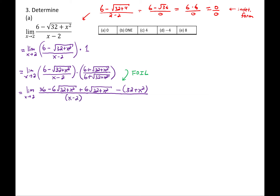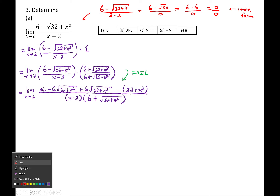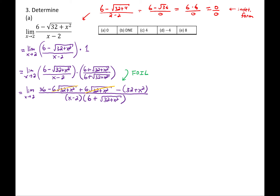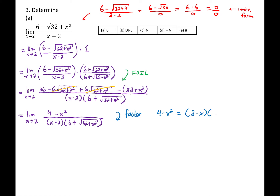Simplifying by collecting like terms: 36 minus 32 gives 4, then subtract x². So the numerator is 4−x² and denominator is (x−2)(6+√(32+x²)). If we plug in 2 now, we still get 0/0, so we need to factor. 4−x² is a difference of squares: (2−x)(2+x). Thinking ahead, I have 2−x upstairs and x−2 downstairs. So I'll factor out a negative sign: −(x−2)(2+x), which lets us cancel (x−2) with the denominator.